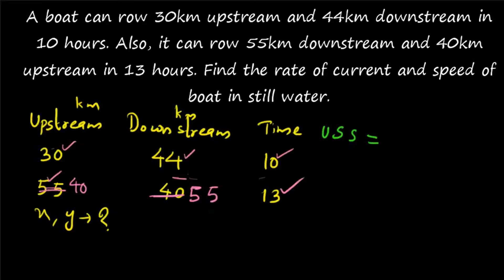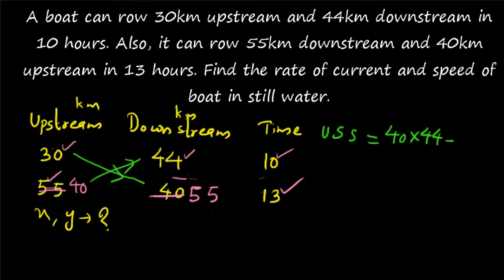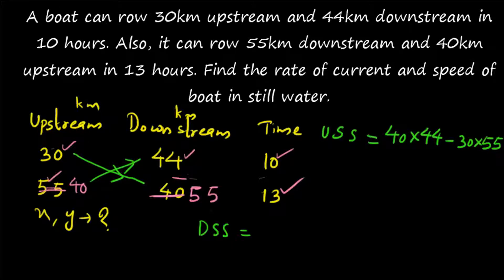Upstream speed is found by cross multiplication. Take 30 × 55 and 40 × 44 and find the difference — the answer should be positive. Since 40 × 44 is greater than 30 × 55, we take (40 × 44) − (30 × 55). The numerator is the same for both upstream speed and downstream speed — it equals the difference between the cross products of the upstream and downstream distances.